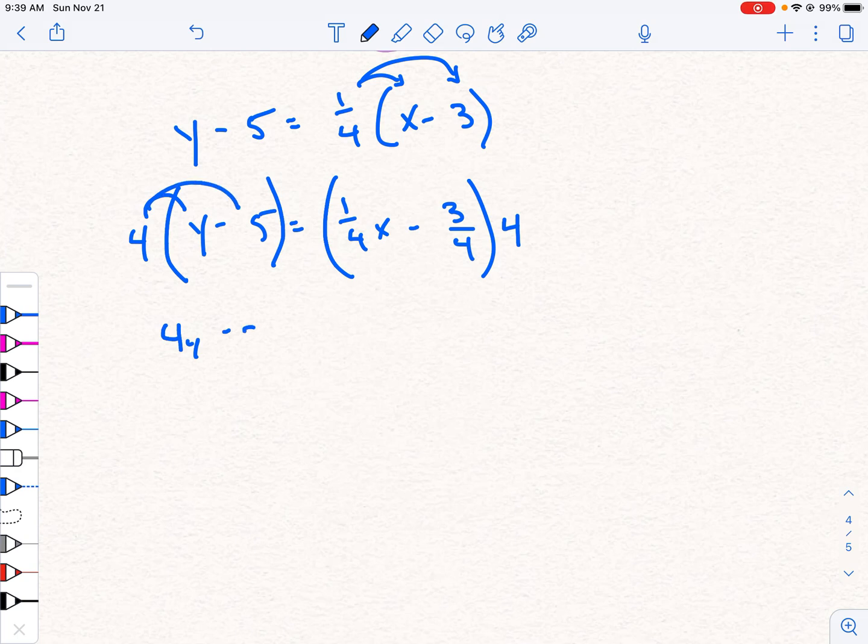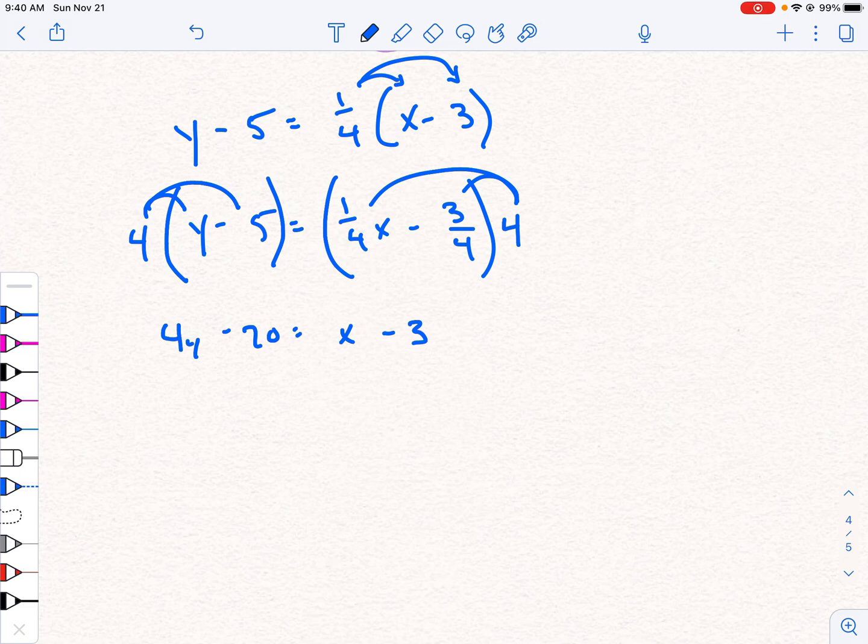So here we go. 4y minus 20 equals 4 times 1 fourth. This is what's cool about this. 4 times 1 fourth is just 1x. And 4 times 3 fourth is just minus 3. So now we no longer have fractions. It's a very easy step to get rid of fractions.